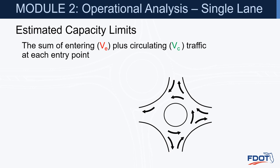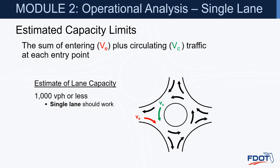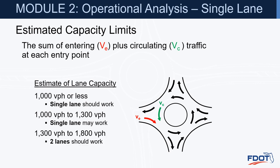To estimate capacity and determine whether an entry needs one or two lanes, look at the sum of entering volume (V-E) plus circulating volume (V-C) at each entry point. If the total is less than 1,000 vehicles, a single-lane entry should work. Between 1,000 and 1,300, a single lane may work but needs to be verified through analysis. Over 1,300, a two-lane entry is likely needed. Over 1,800, more than two lanes may be required.